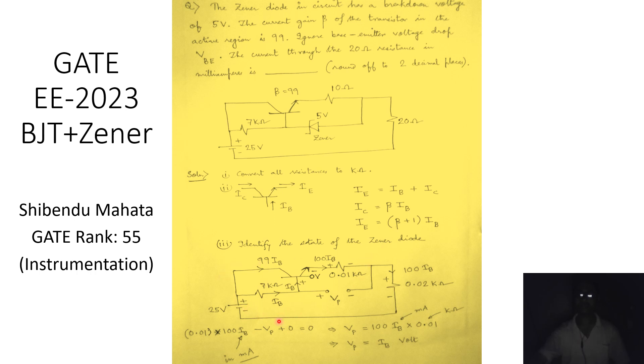Looking at the circuit with the source at 25 volts: the current flowing into the base is ib, which comes through the 7 kilo ohm resistance. The collector current is beta times ib, which is 99·ib. The summation of base and collector currents gives 100·ib flowing through the emitter terminal. Since the zener path is open, this 100·ib can only flow through the 0.02 kilo ohm resistance.